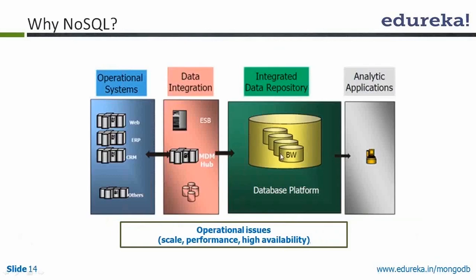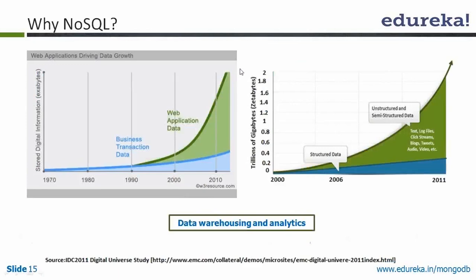With other systems it was complex to perform analytical activities and there were many operational issues. In a data warehouse system, you would have an operational system, then use data integration technology, push to a database, then use an analytical application. Now the scenario has changed — you can attach both your application and analytical application directly to NoSQL databases. Since unstructured and semi-structured data is growing very fast, traditional systems are not capable of handling it, which is why NoSQL came into the picture.